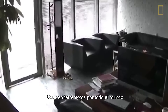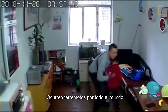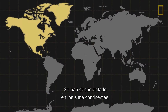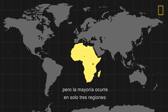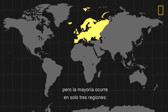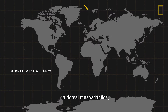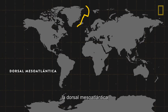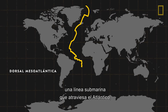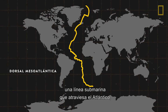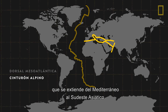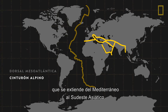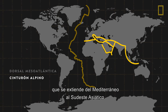Earthquakes occur around the world. They've been recorded on all seven continents, but most quakes take place in just three regions: the Mid-Atlantic Ridge, an underwater line that runs down the Atlantic Ocean, and the Alpine Belt, which stretches from the Mediterranean to Southeast Asia.